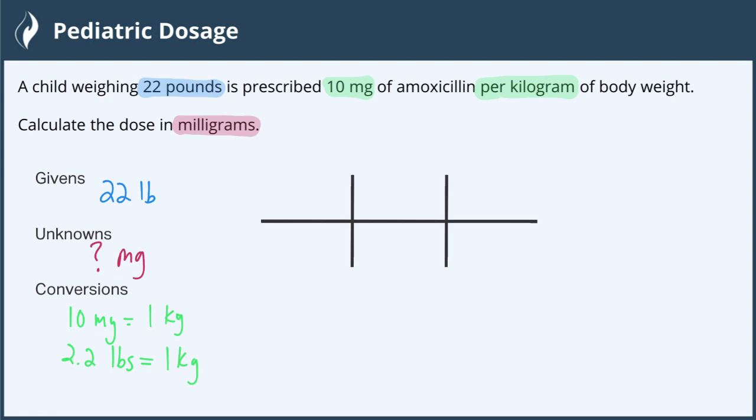So we start with what we're given, the 22 pounds. And that goes in the top first spot here. And then we're going to turn those pounds into kilograms. So we have 2.2 pounds is equal to 1 kilogram. So we put pounds on the bottom and kilograms on top so that pounds can cancel.